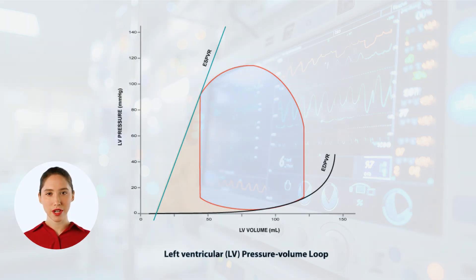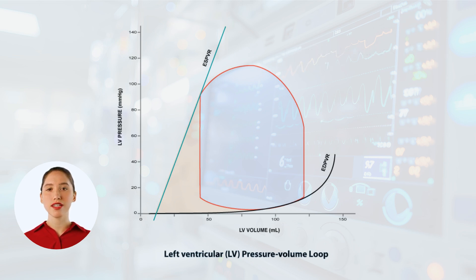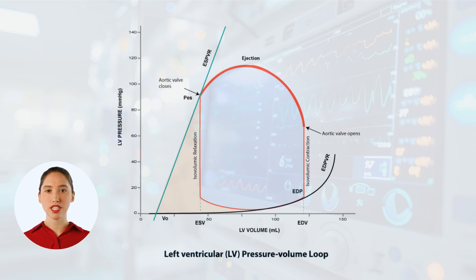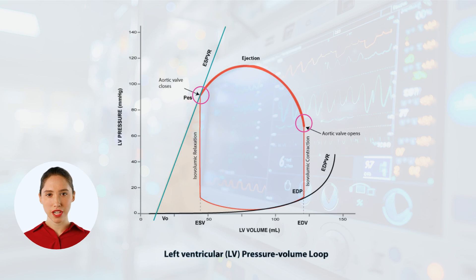Now let's define afterload. Afterload is the left ventricular wall stress — it is similar to preload, but here it is during the ejection phase, the phase when the heart is pumping blood into the aorta. This can be visualized on our pressure-volume loop as the segment where ejection occurs between the opening and closing of the aortic valve. It is interesting that we had a single time point for preload at end of diastole, but with afterload we have an indefinite number of points during ejection.